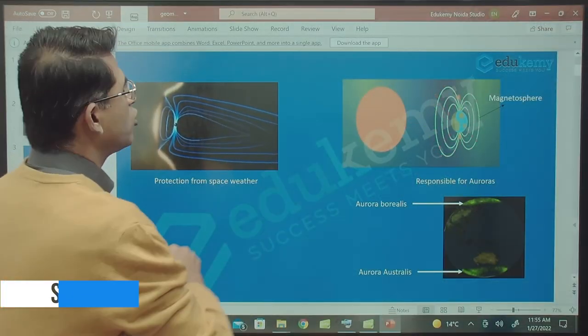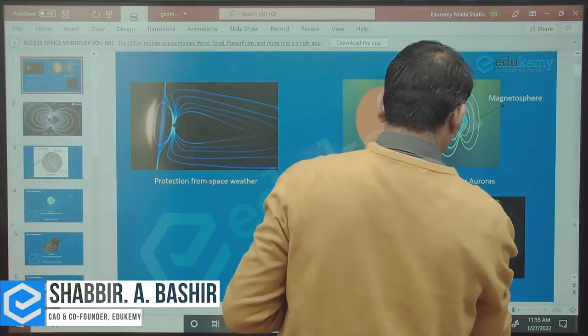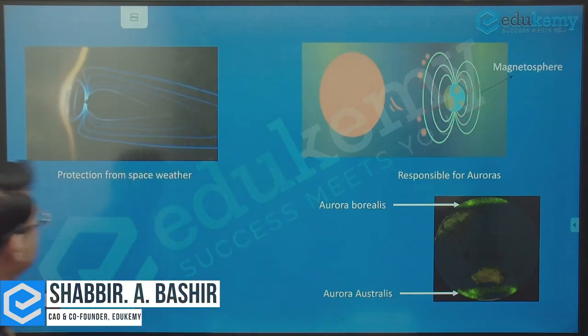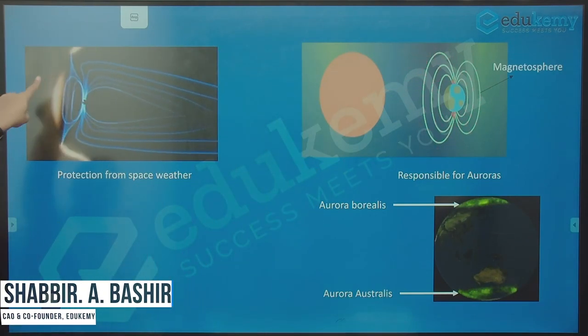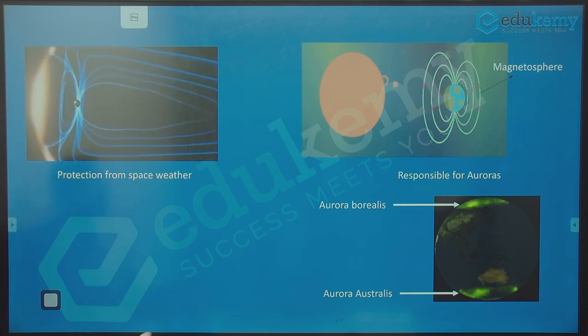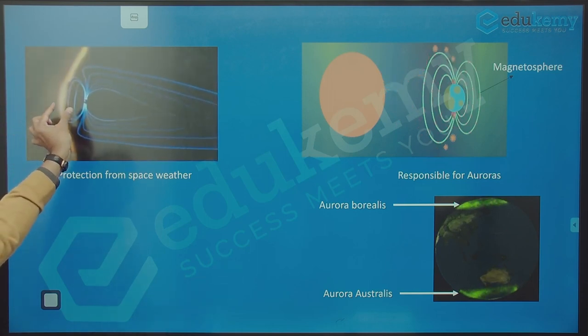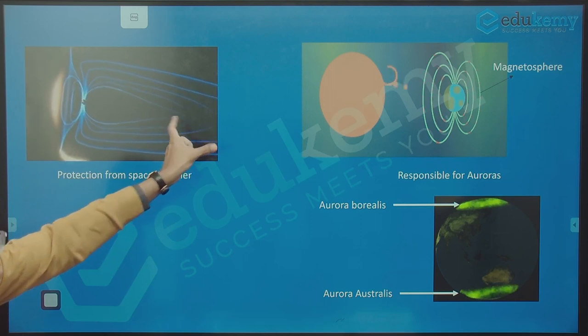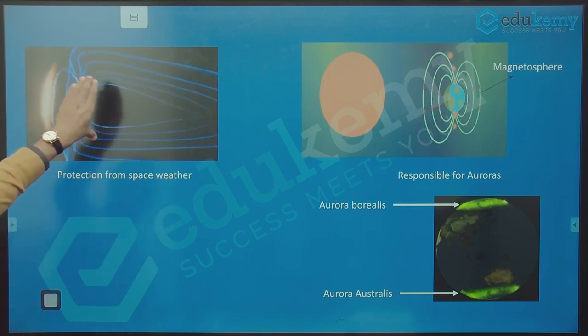Today we're discussing geomagnetism. The magnetosphere is the area of magnetic influence. It's not perfectly spherical - in some areas it's less, in some areas it's more. This is typically called the Van Allen belts. The sun's rays, the most harmful rays, are blocked by the magnetosphere.